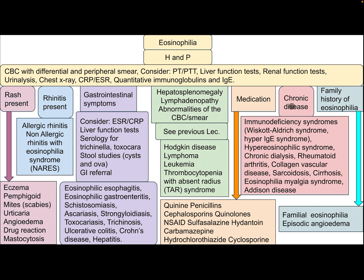If there is chronic disease history, this could be immune deficiency syndromes like Wiskott-Aldrich syndrome, hyper-IgE syndrome, hypereosinophilic syndrome, chronic dialysis, rheumatoid arthritis, collagen vascular disease, sarcoidosis, cirrhosis, eosinophilia-myalgia syndrome, and Addison's disease. If there is a family history of eosinophilia, this could be familial eosinophilia or episodic angioedema.